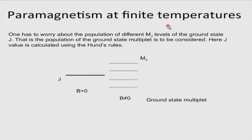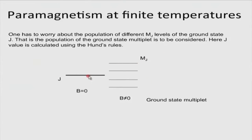In the case of Hund's rule, we found a ground state obtained from J equal to L minus S or L plus S depending on whether the shell is less than or more than half filled — but that was a ground state. In reality, we are interested in finding the magnetic response at finite temperatures. This is the ground state one obtains in the paramagnetic situation. When you apply a magnetic field, this ground state J splits — it has a degeneracy of 2J+1, meaning 2J+1 different M_J values all having the same energy in the absence of a magnetic field. When you apply a field, the degeneracy is removed. This is known as the ground state multiplet, and Hund's rule gives the quantum number corresponding to it.